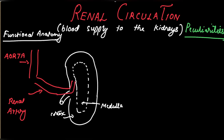From the renal artery arises a large artery for each lobe — the interlobar artery — which curves over the structures known as renal pyramids. You can see these are the renal pyramids. The arteries that curve over the pyramids are known as the arcuate arteries.